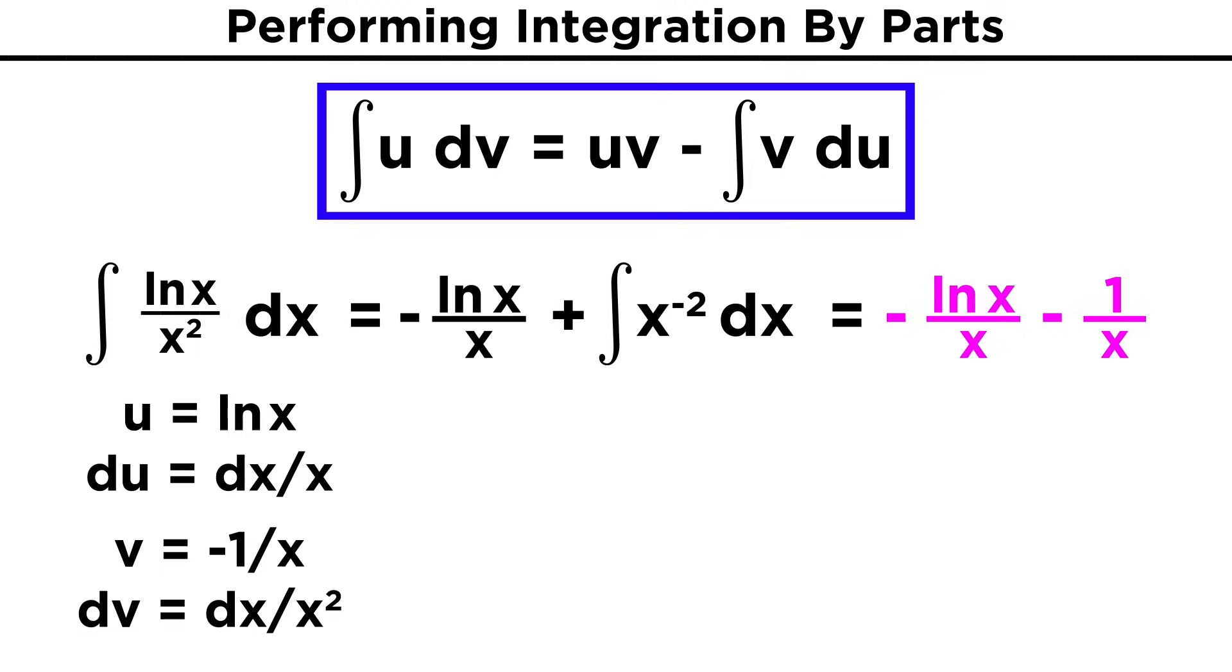So we end up with negative ln(x) over x minus one over x. We can combine those fractions, and that's the answer, remembering to add plus c, as we always do when dealing with indefinite integrals. It may not look great, but if that's what we get, then that's what it is, no matter how pretty or ugly.